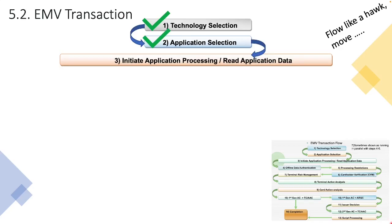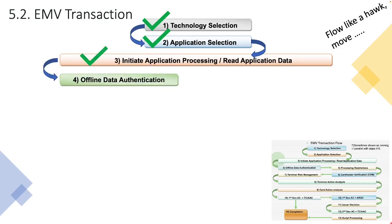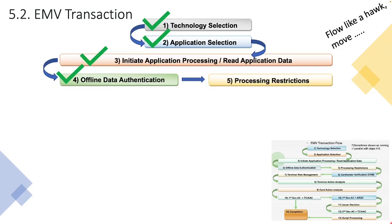There was an exchange of data between the virtual card and the terminal. The terminal underwent a process of offline data authentication, or CAM, in which it performs certain processes to validate whether the card is genuine or not. We then went into a phase where we checked the conditions during this transaction to make sure they're valid — things like expiry date and effective date, whether it's a domestic or international transaction.